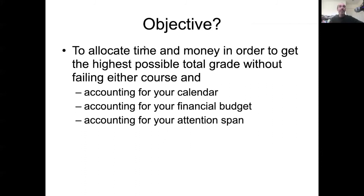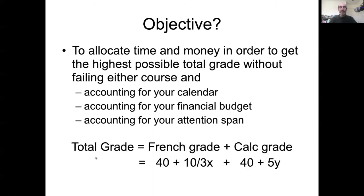So then what's our objective? We're going to allocate time and money to get the highest possible total grade without failing either course and accounting for calendar, budget, and attention span. So that's not the only objective you could have written down. Like I said, you could have weighted these two things differently. But if I say that what I want to maximize is the total grade, I would write down an objective function for the total grade. So the total grade is my French grade plus my calc grade. I currently have a 40 in each of these. But I can increase my French grade at 10 points per three hours, and I can increase my calc grade at 10 points per two hours, or five points per hour. So this gives us an equation for the overall grade. And so now that's the thing we want to, in this case, maximize. We can also set up constrained optimization problems to minimize things.